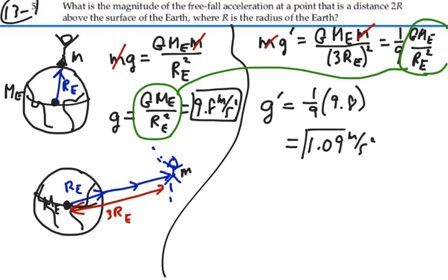So if you were to travel to twice the radius of the Earth above the surface of the Earth, the gravitational acceleration at that point would be 1.09 meters per second squared.